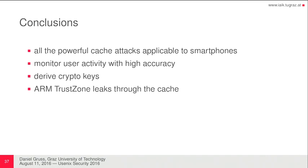For the conclusions: we show that all the powerful cache attacks are now applicable to smartphones, including Prime and Probe and Flush and Reload. We are able to monitor user activity with high accuracy. We are able to derive crypto keys because Android apparently still uses weak crypto, and it shouldn't. And finally, we found leakage from the TrustZone that can be used in more sophisticated attacks. Thank you for your attention.